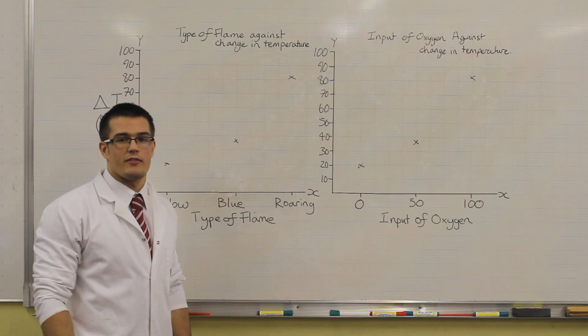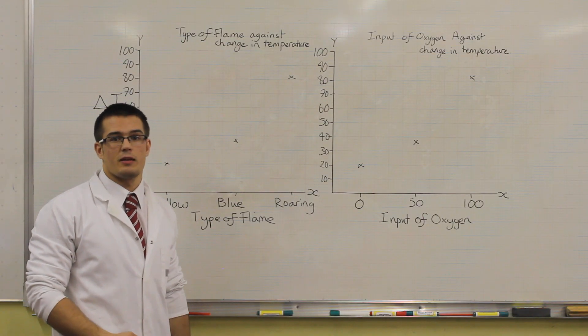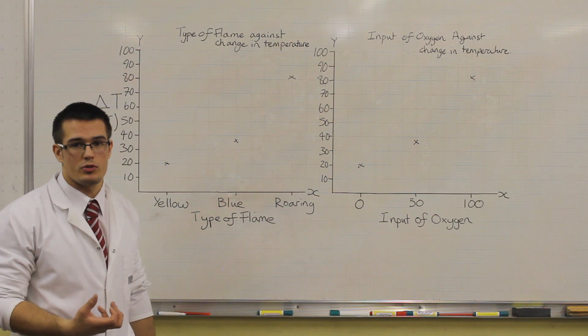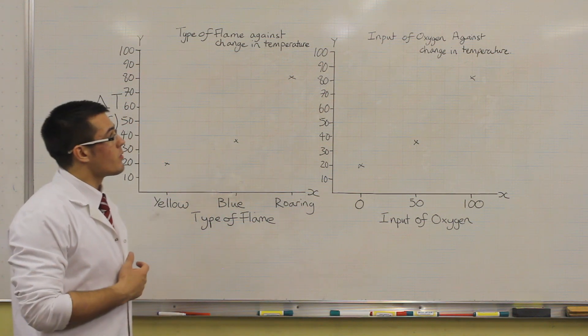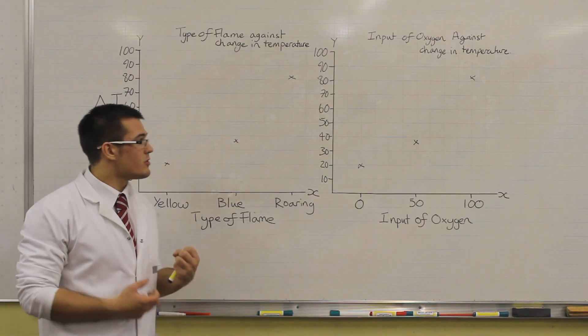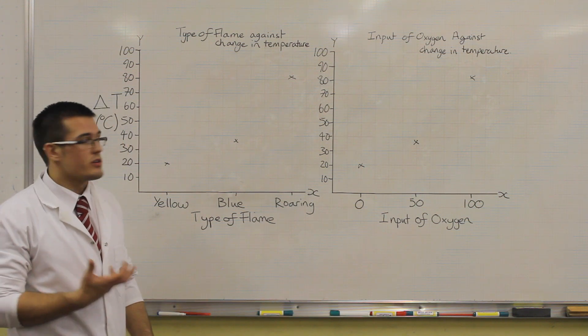In your lessons you will have carried out an investigation into which type of flame gives out the most energy. You will have done this by measuring the change in temperature of most probably water. Once you've collected your results, we can plot those in different ways. This section is looking at how we can effectively analyze results.